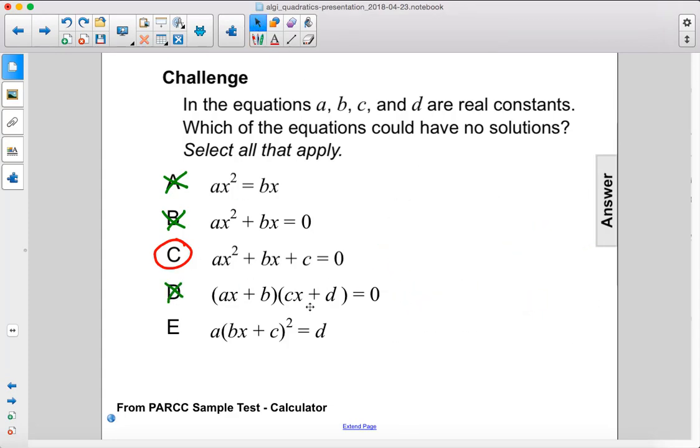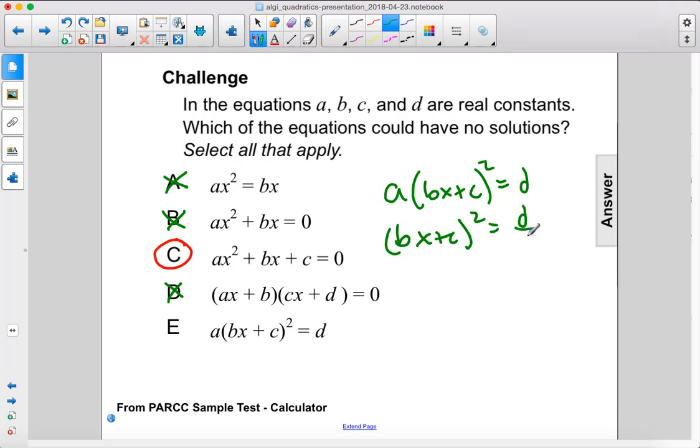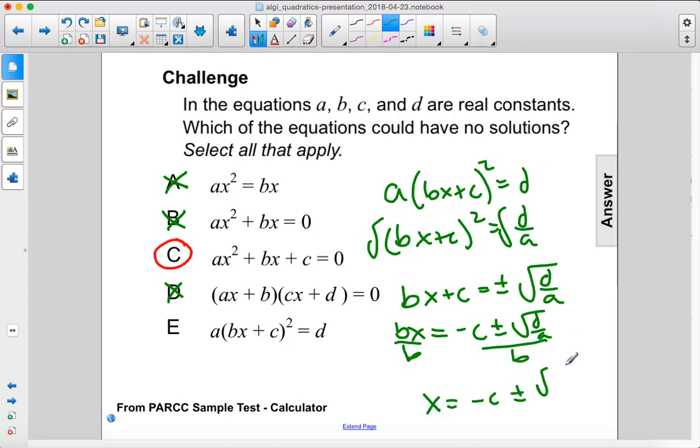Finally, we have this one, so that is a times bx plus c squared equals d. We will move the a to the other side. bx plus c squared equals d over a. We'll take the square root of both sides. That gives us bx plus c equals plus or minus the square root of d over a. And then we will move the c over, so we get bx equals negative c plus or minus the square root of d over a. Divide by b.